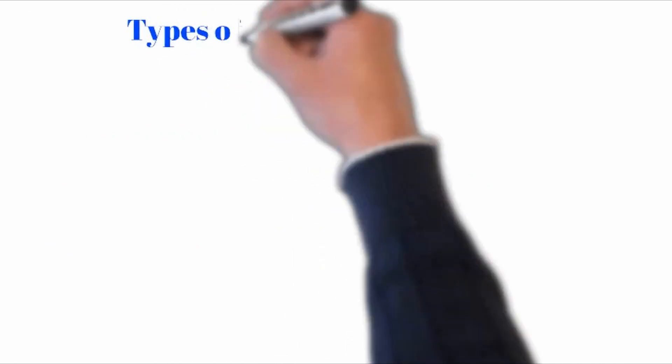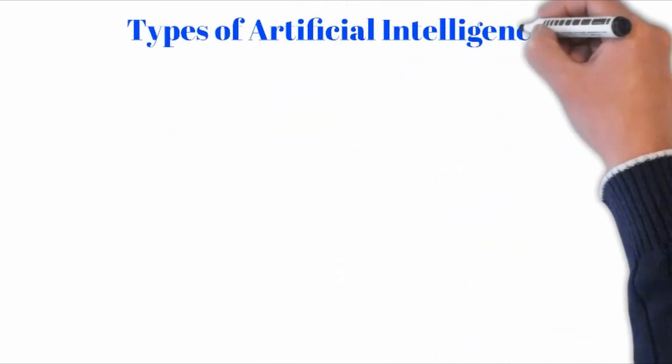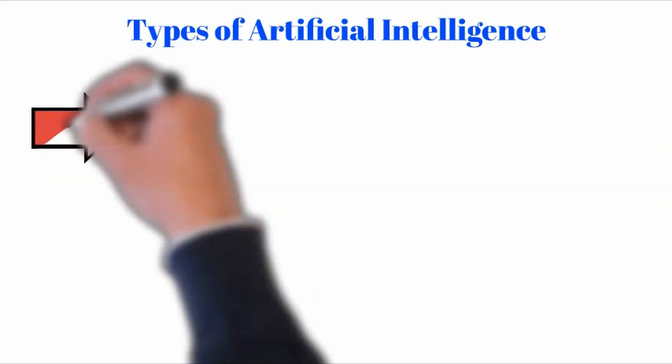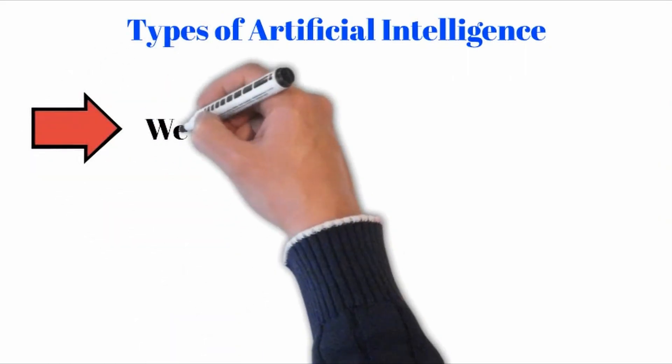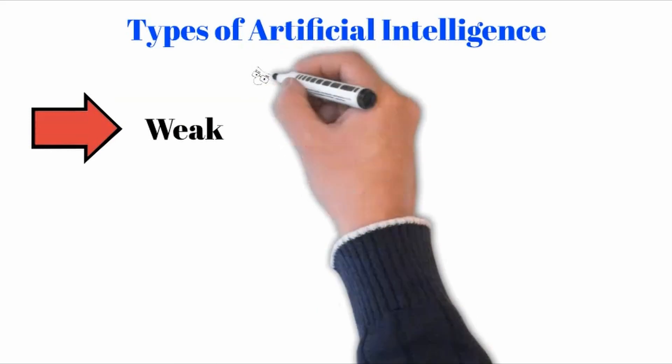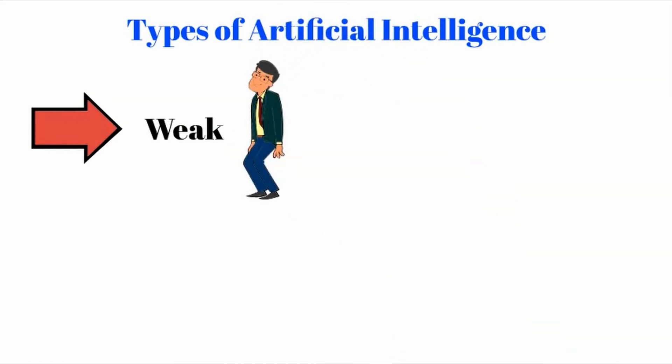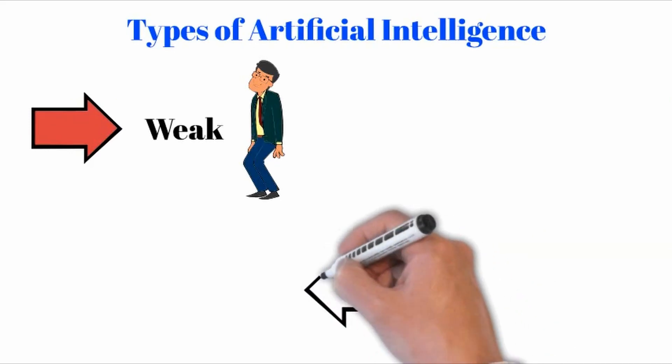Artificial intelligence is divided into several types, depending on what it is used for and according to the level of complexity and independence. They include, among others, weak artificial intelligence, also called narrow artificial intelligence.